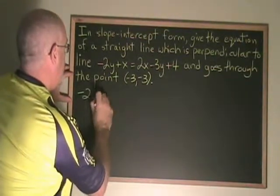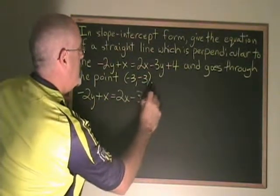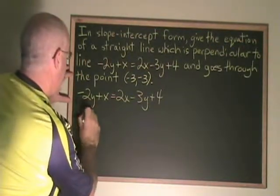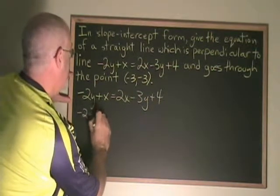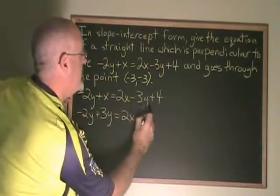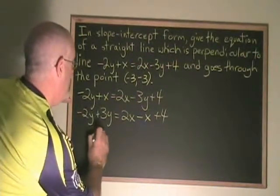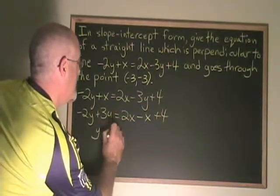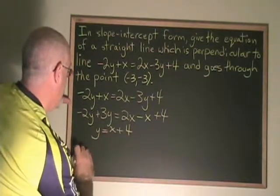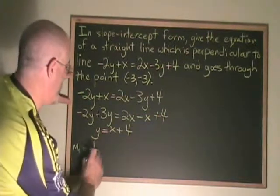Negative 2y plus x equals 2x minus 3y plus 4. Getting all of the y's to the left, I have negative 2y plus 3y equals 2x minus x plus 4. This quickly simplifies to y equals x plus 4. The slope of line 1 is 1, and we want that in the form of a fraction, so we write it as 1 over 1.